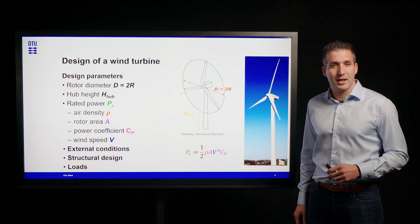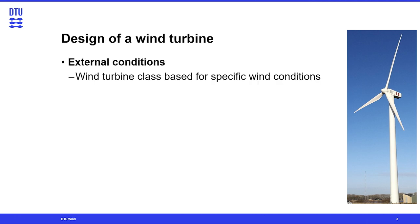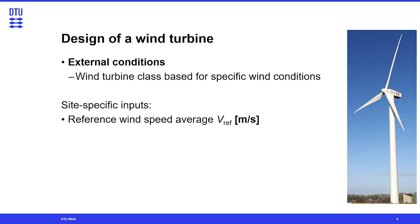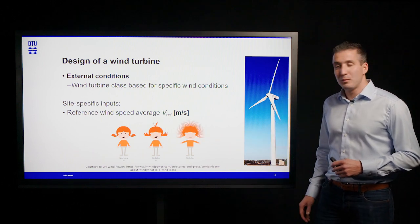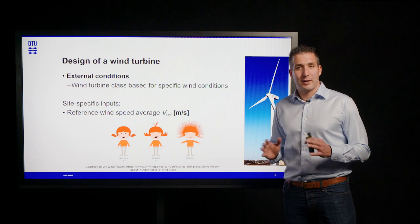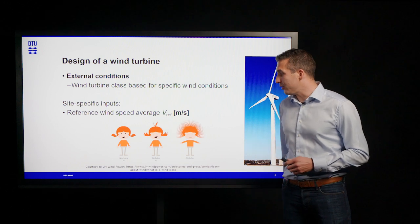During the expected operation lifetime of around 25 years, when we talk about external conditions we talk about the site-specific inputs needed to design our wind turbine. Usually we talk about wind turbine classes based on the specific wind conditions for the environment the wind turbine should operate in — the reference wind speed that occurs on the site, and of course the highest wind speed we can expect. From the reference wind speed we can characterize our wind turbine into specific IEC classes according to wind and turbulence.